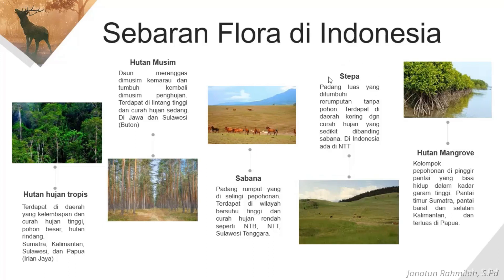Lalu ada stepa — padang luas yang ditumbuhi rumputan tanpa pohon. Terdapat di daerah kering dan curah hujannya sedikit dibanding sabana. Contoh kalau di Indonesia ada di NTT. Kalau di luar, misalnya di New Zealand, di sana ada padang rumput yang sangat luas, biasanya untuk peternakan sapi dan biri-biri. Kalau di Indonesia ada di Atambua.